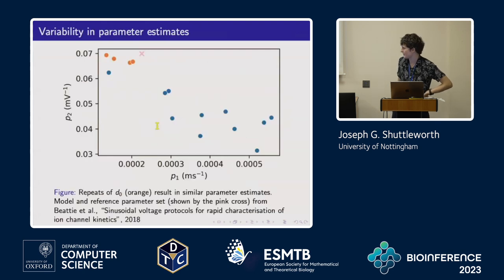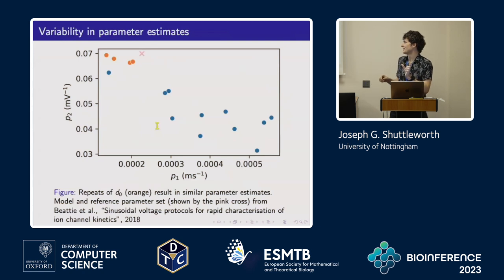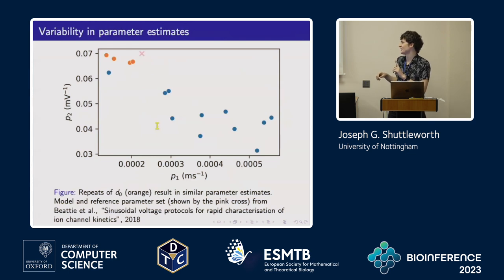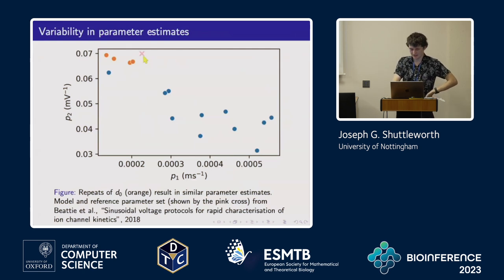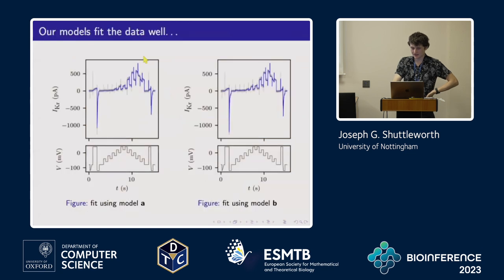We fit a model to each cell and protocol pair, so here we're looking at all the parameter sets we get back from one cell. The orange ones are all the repeats of that same D0 protocol and they give back something quite similar, but there's a big spread in all the other predictions because they came from doing different experiments. On some of the protocols like D0, we do a really good job and the model fits really quite well.